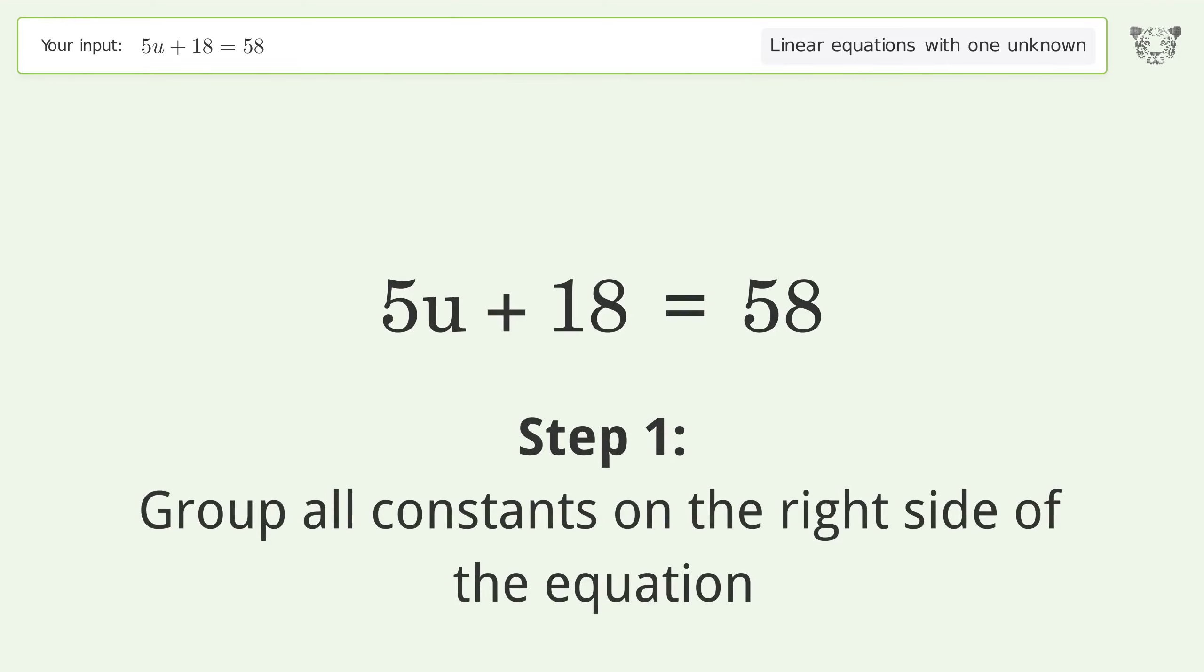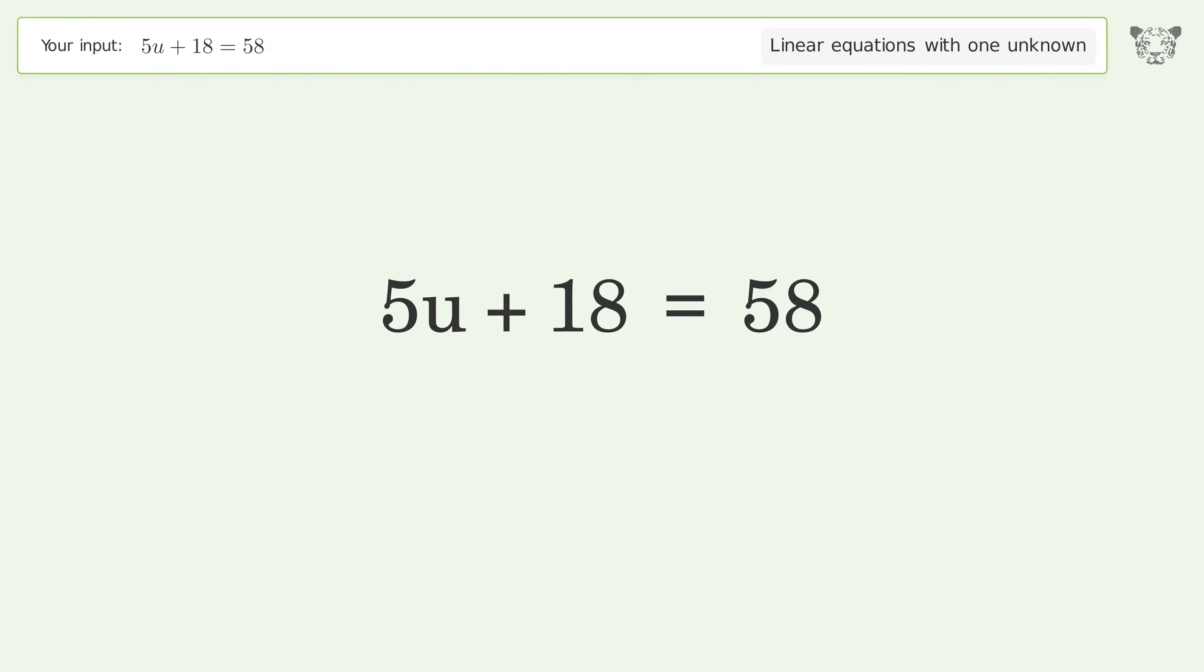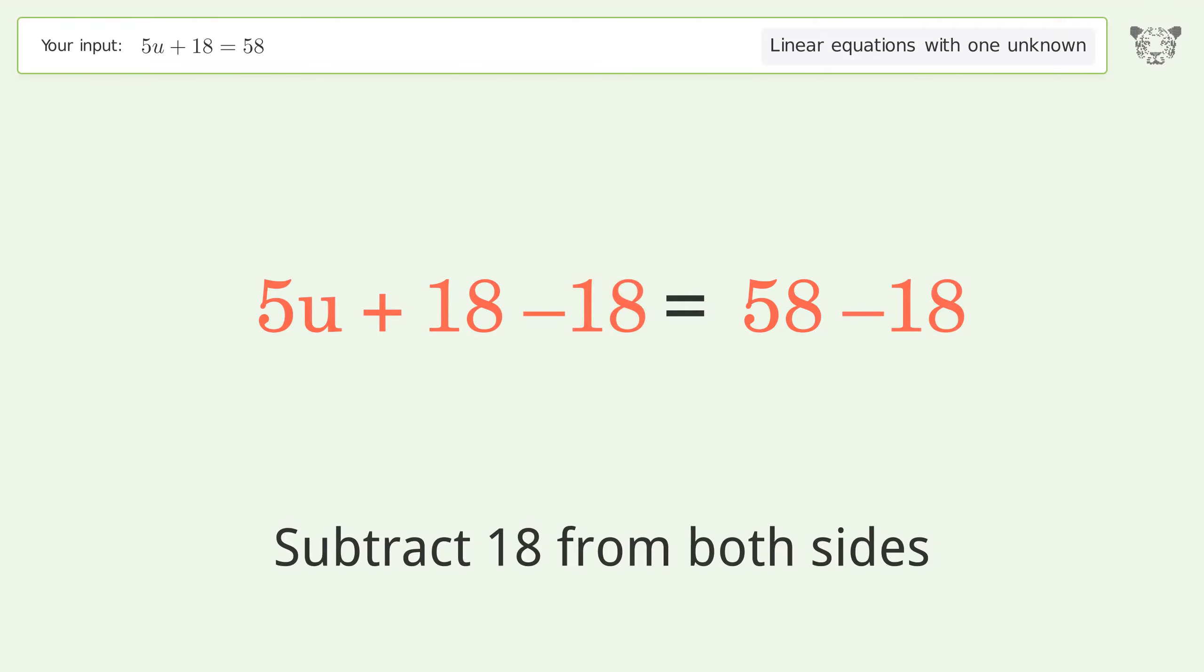Group all constants on the right side of the equation. Subtract 18 from both sides. Simplify the arithmetic.